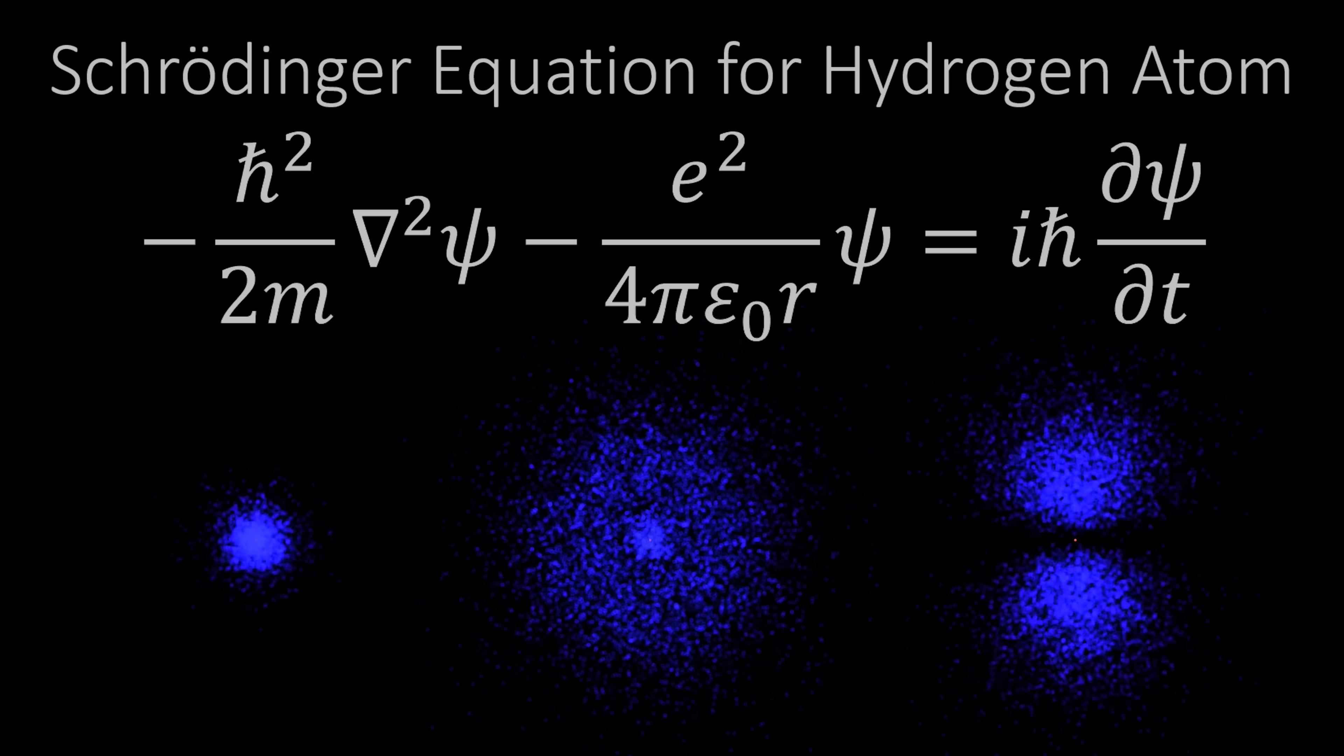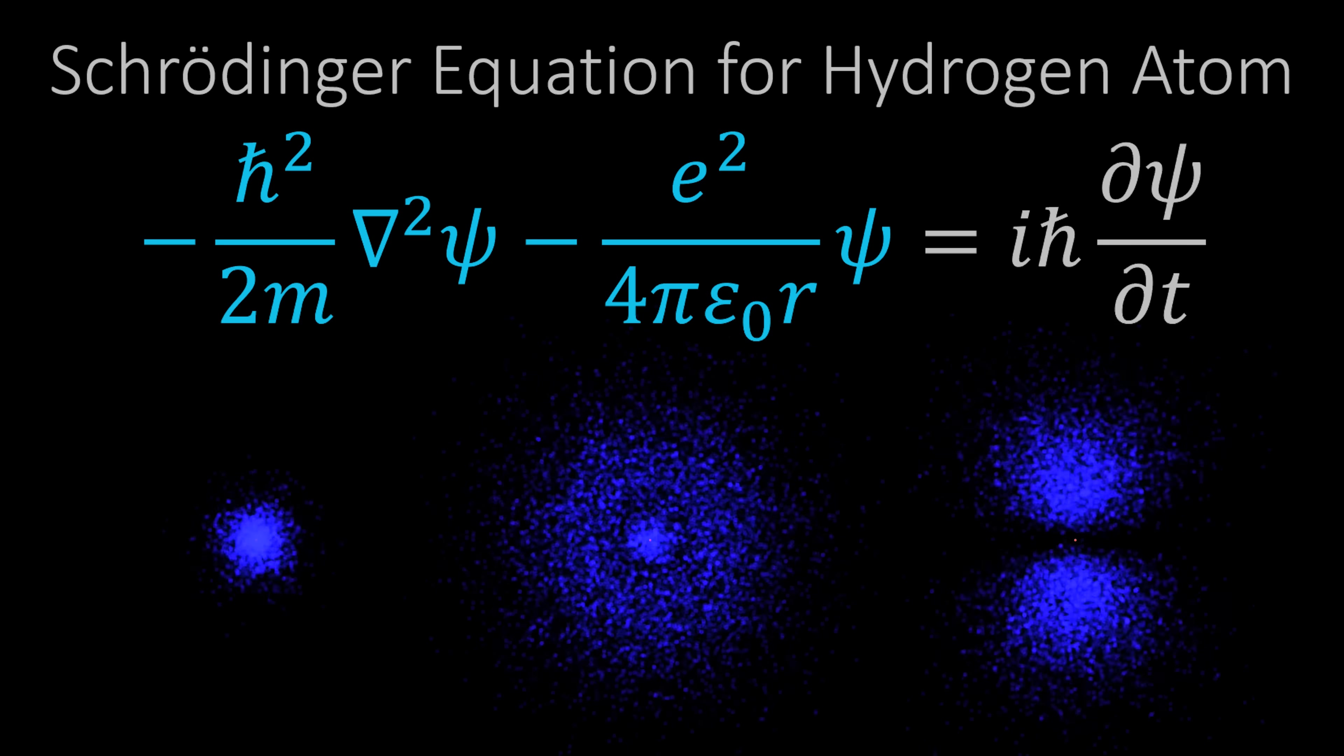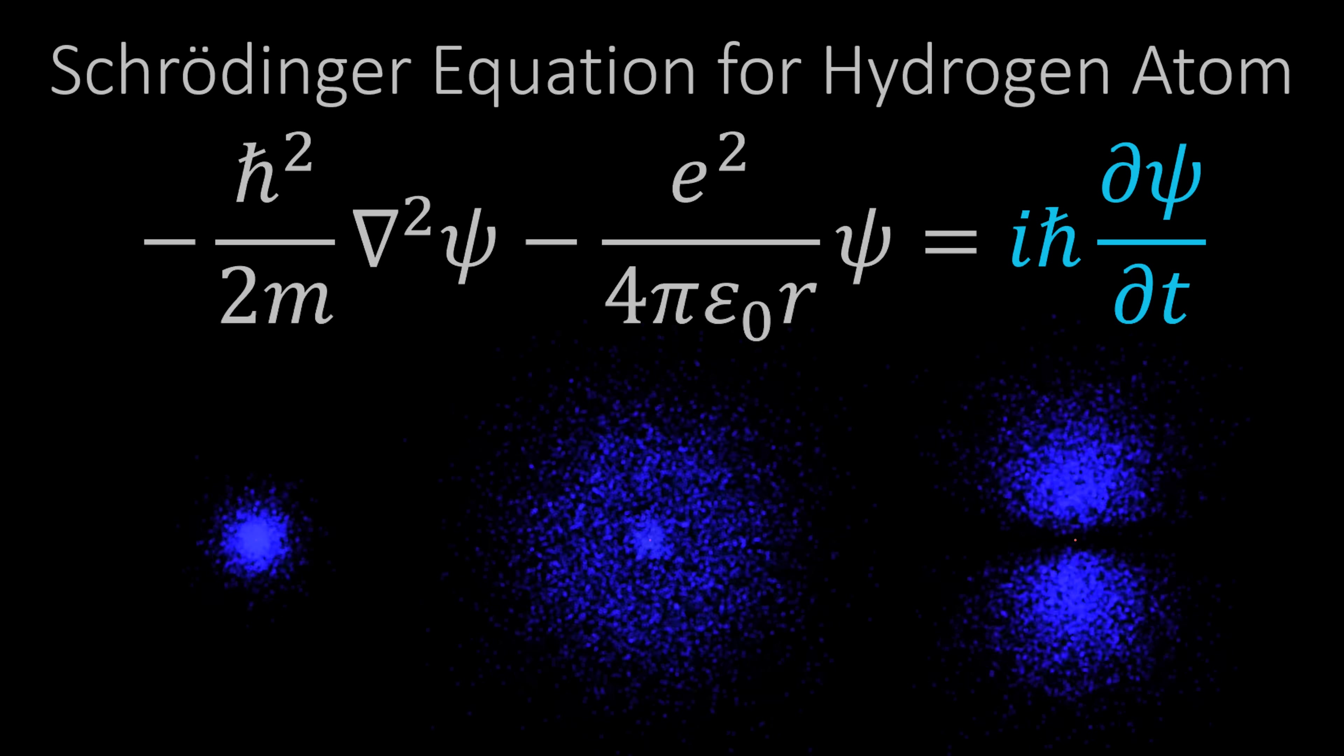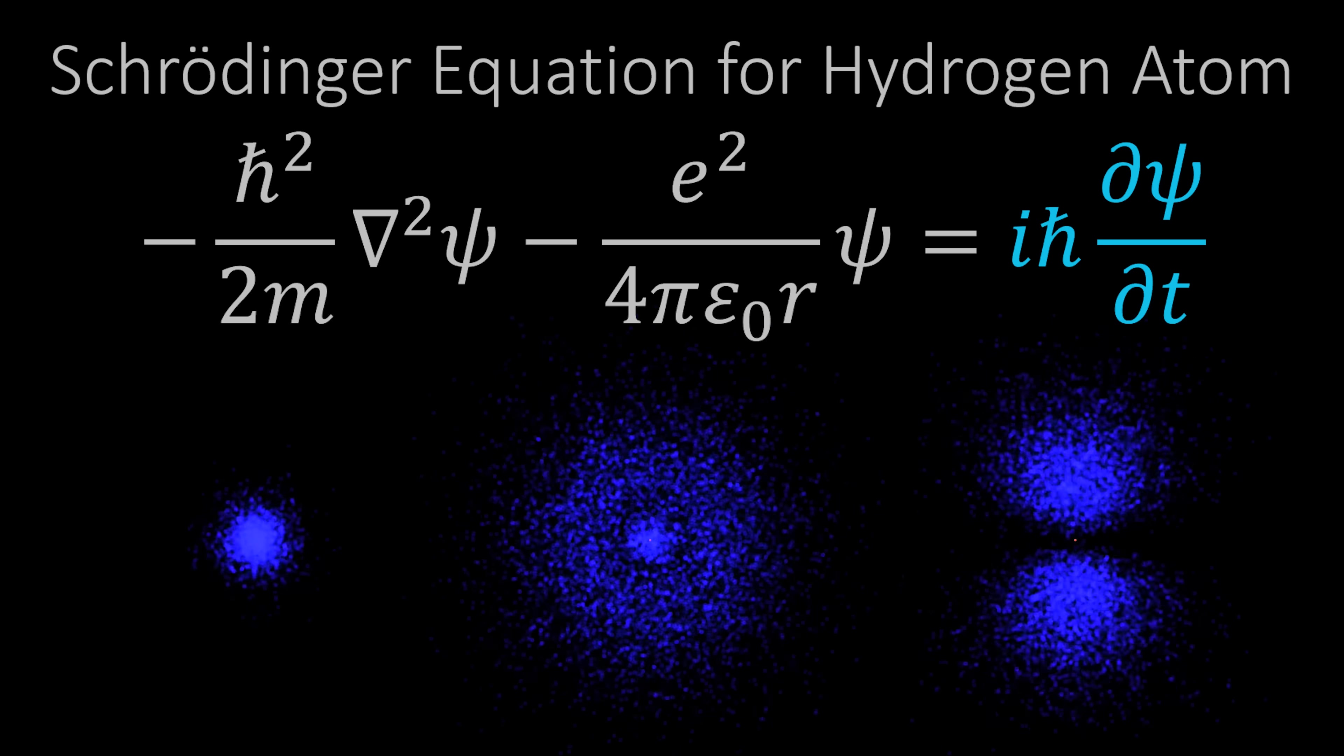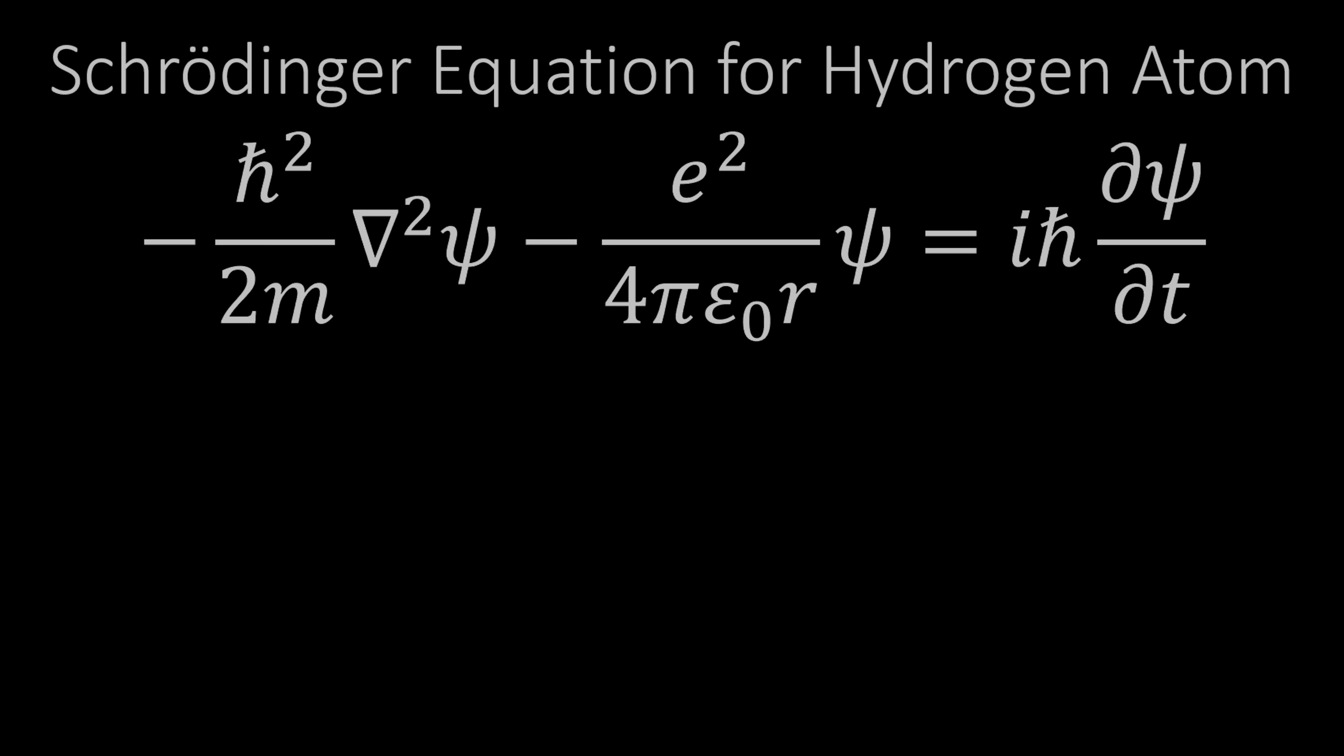Today I want to take as the starting point the Schrödinger equation for the hydrogen atom that we derived in hydrogen part one. Now the question I want to ask is: what about a free electron that's not bound to a proton?